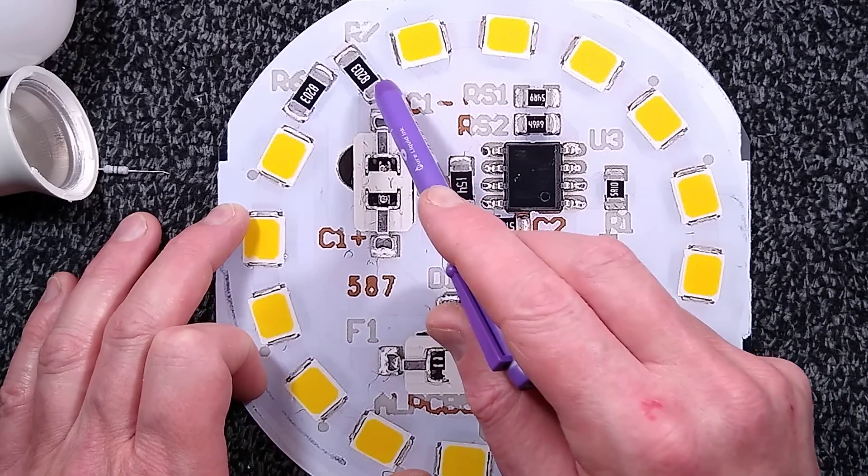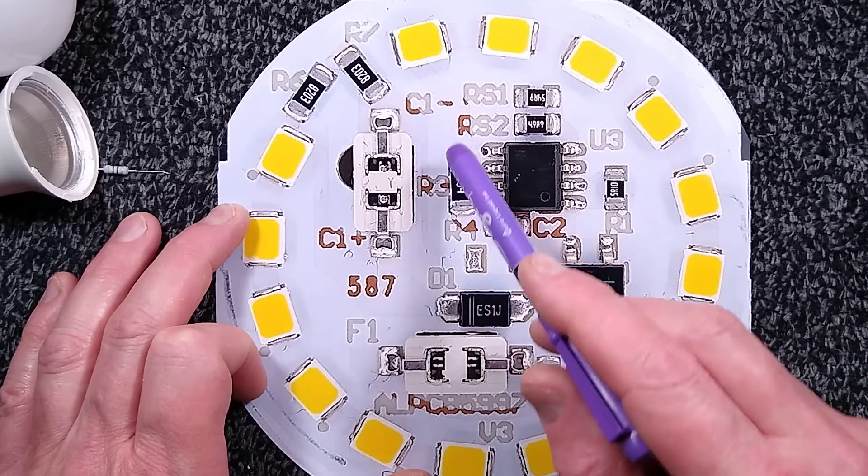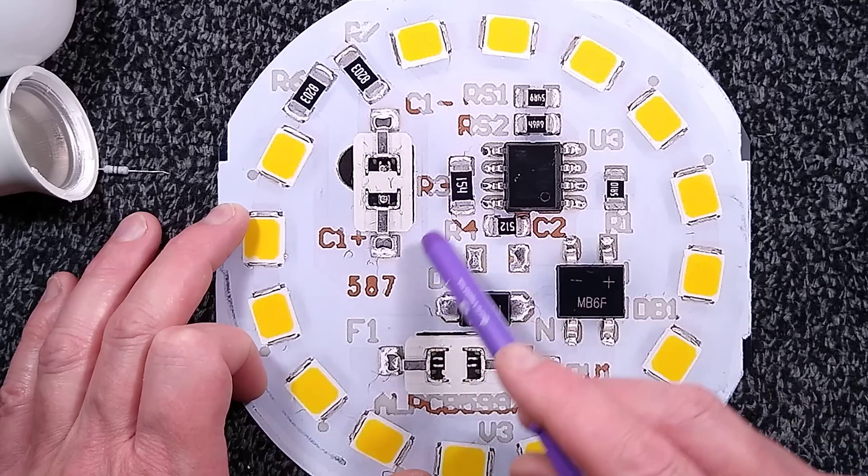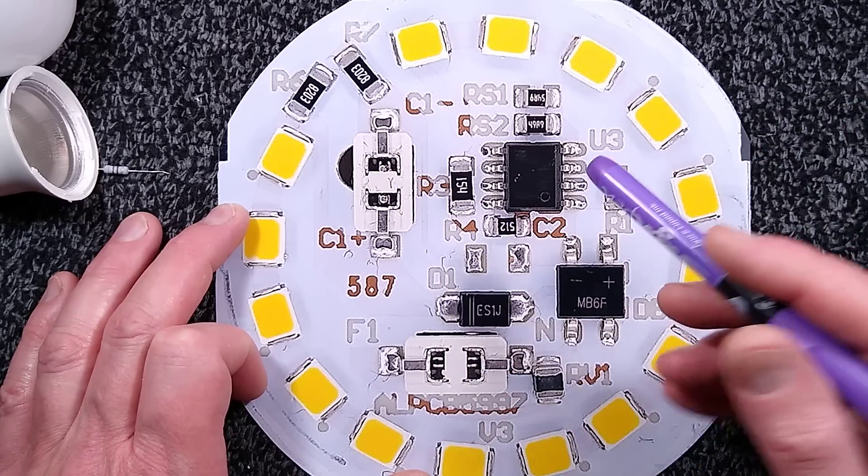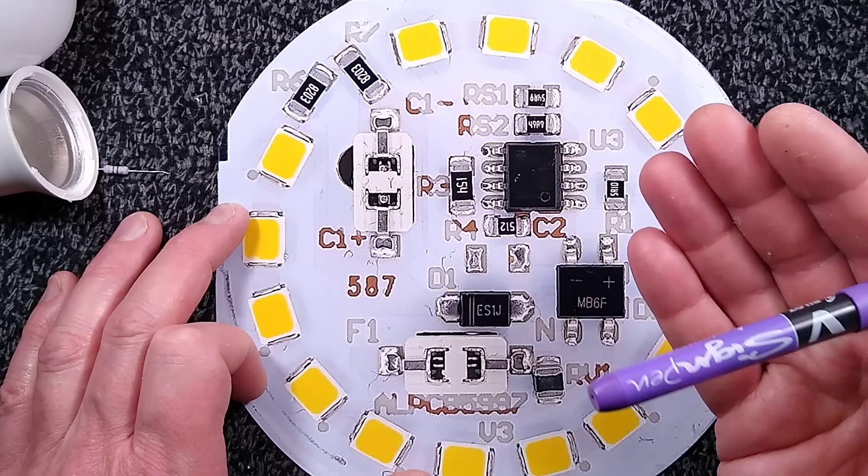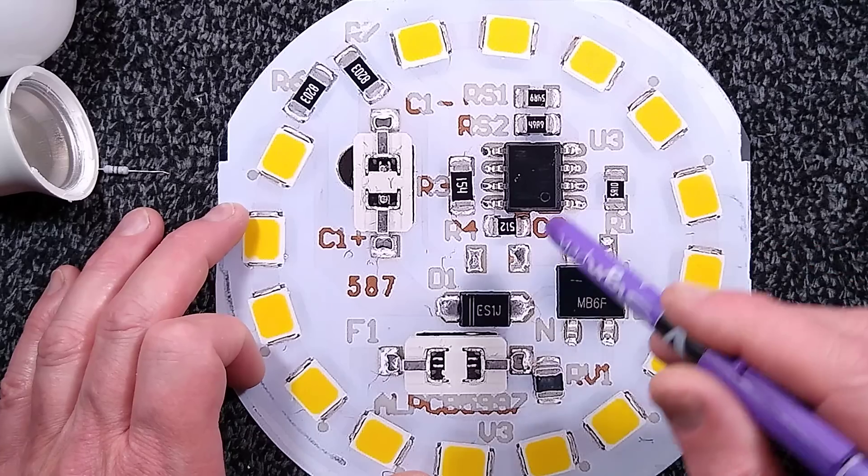These two resistors are in series, they're 820k and they are across that capacitor to provide a discharge path when you turn it off and also to provide a slight load to limit the risk of lamp ghosting.